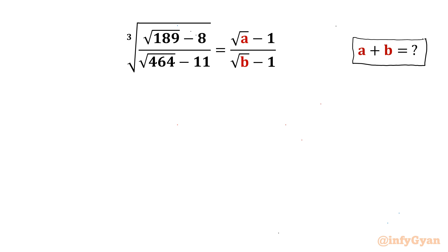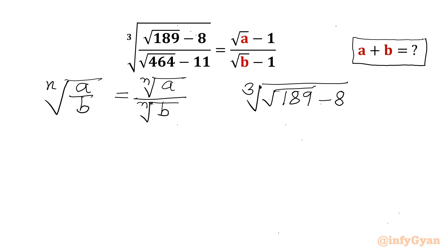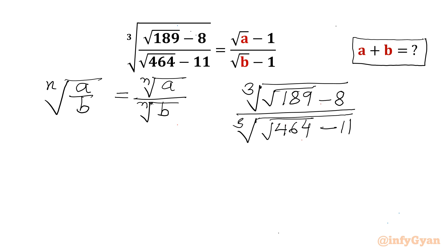Let's get started by writing one property from radicals. We can consider the nth root of a over b equal to nth root of a divided by nth root of b. So our LHS we can write as cube root of (square root 189 minus 8) divided by cube root of (square root 464 minus 11), and RHS is square root a minus 1 over square root b minus 1.